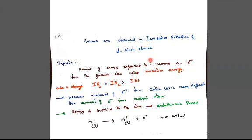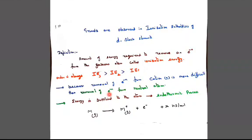The amount of energy required to remove an electron from a neutral gaseous atom is called ionization energy. The third ionization energy is greater than the second ionization energy, and the second ionization energy is greater than the first, because removal of an electron from a cation is more difficult than removal of an electron from a neutral atom.